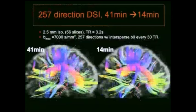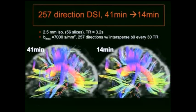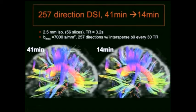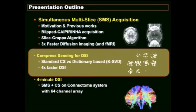We can also apply blip-CAIPIRINHA to speed up diffusion spectrum imaging, which is a rich encoding method for diffusion but takes about 41 minutes — not clinically applicable. Applying SMS gives a 3× reduction in acquisition time. Images from the standard and 3× accelerated acquisitions look very similar. That concludes the first part on simultaneous multi-slice acquisition; the second part will cover compressed sensing for DSI.